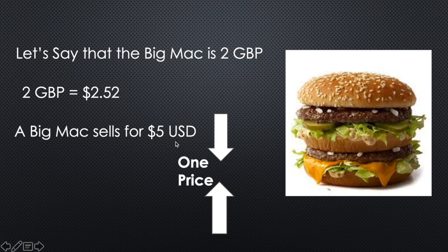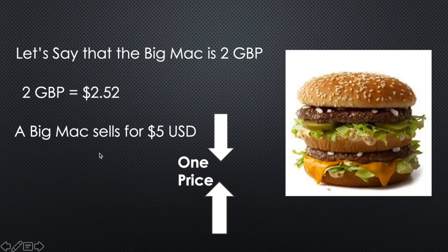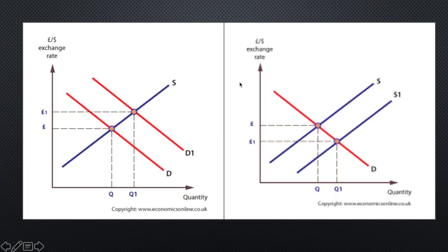Arbitrage is trying to push the price equal. So if we're buying it at $2.52 and the United States is buying it at $5, they're going to try to make it in between — crunch the price to one price. That's the law of one price. For example, we would be selling it for around maybe $4.10 in the United States with this law of one price.